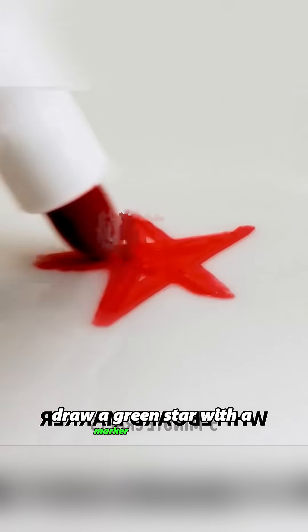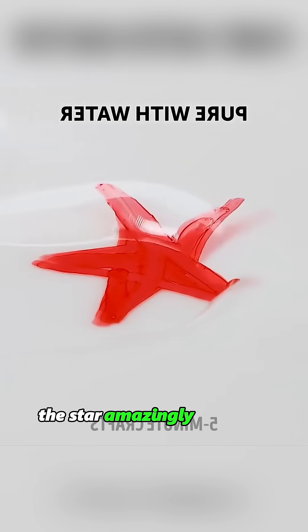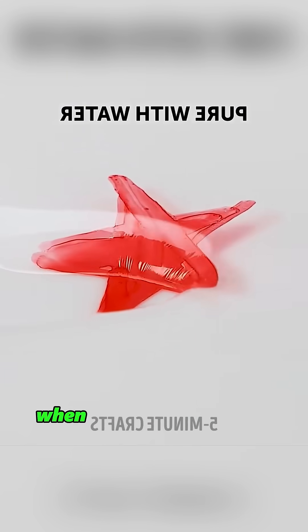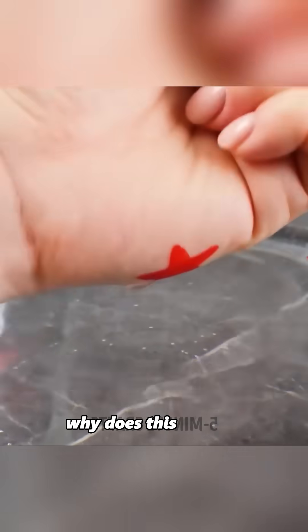Draw a green star with a marker on a plate. When water covers the star, the star amazingly floats to the surface. When you try to touch these stars, they stick to your hand. Why does this happen?